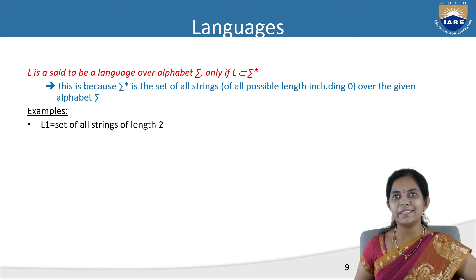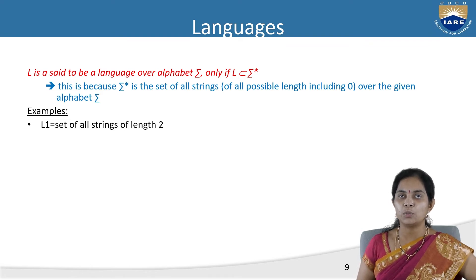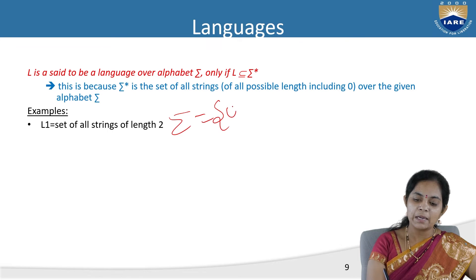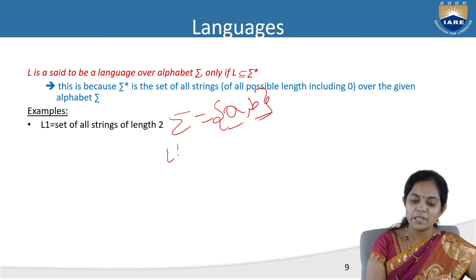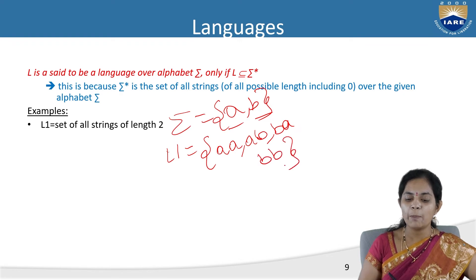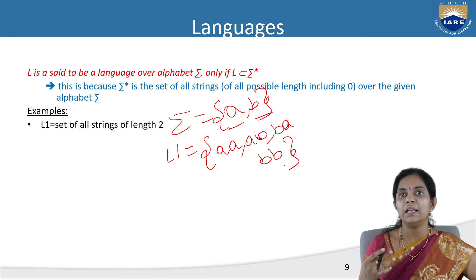Here are examples. L1 is the set of all strings of length 2. With sigma = {a, b} and length 2, the strings are: aa, ab, ba, bb — these are all possibilities of string length 2.